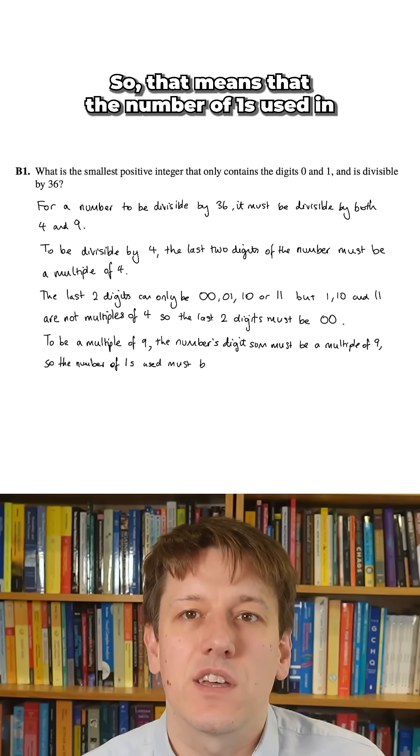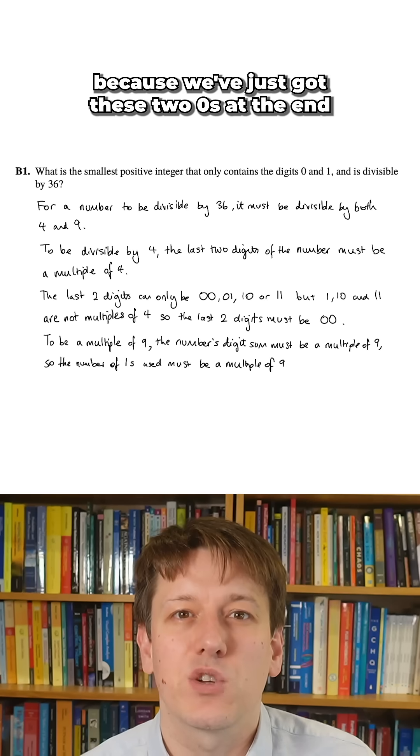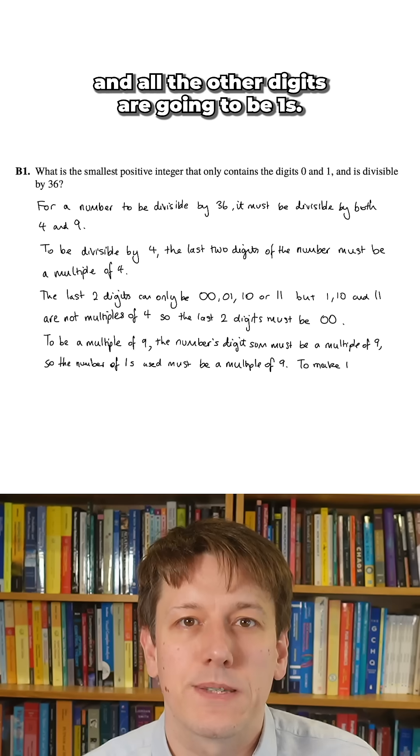That means the number of 1s used in the number must be a multiple of 9, because we've just got these two 0s at the end and all the other digits are going to be 1s.